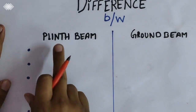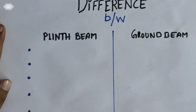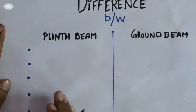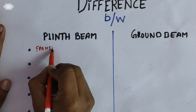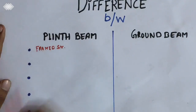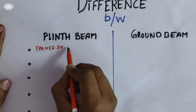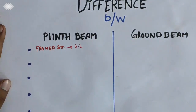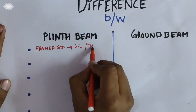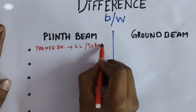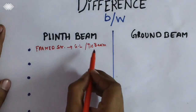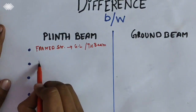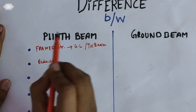Today we'll discuss what's the difference between the plinth beam and the ground beam. First, I would like to discuss about the plinth beam. Plinth beam is generally a framed structure which is provided at ground level. It is also known as a tie beam because it binds the columns.